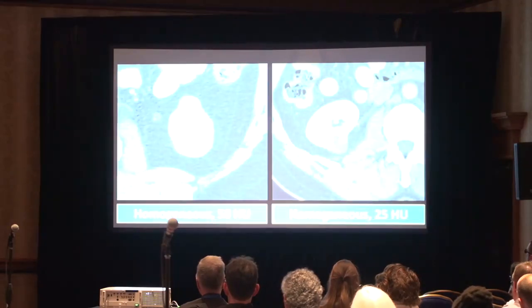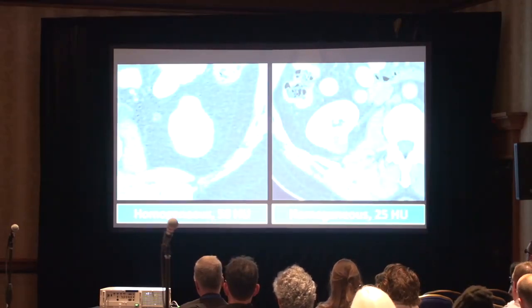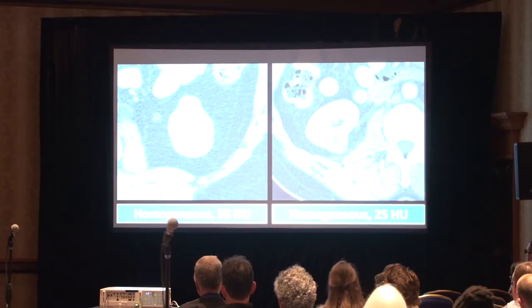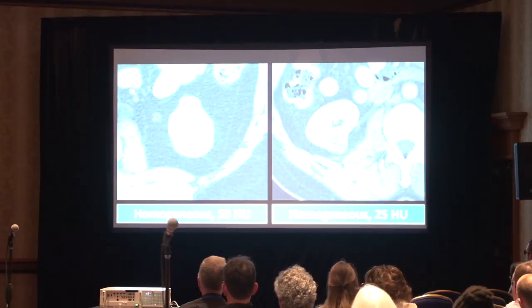Here we have two examples. On the left, we have a renal cell carcinoma that was homogeneous and showed HU of 58. And then on the right, we have a renal cyst that was also homogeneous but had a much lower HU of 25.